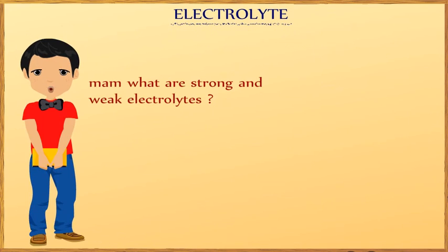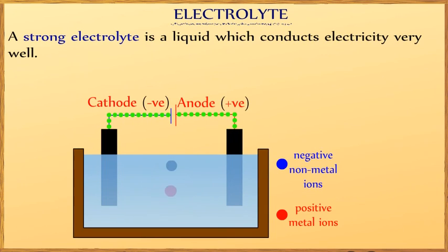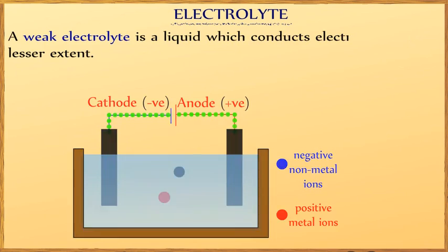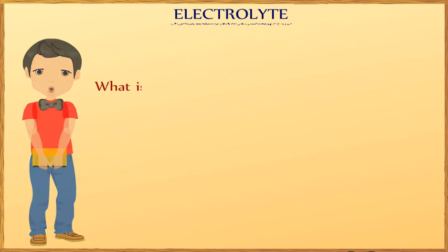Ma'am, what are strong and weak electrolytes? A strong electrolyte is a liquid which conducts electricity very well. A weak electrolyte is a liquid which conducts electricity to a lesser extent. What is an electrode?